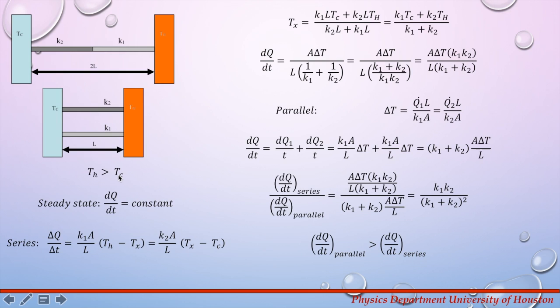So each rod has a length L and cross-sectional area A. The rods are first configured in parallel and then in series. We want to determine which configuration has the largest heat flow rate.